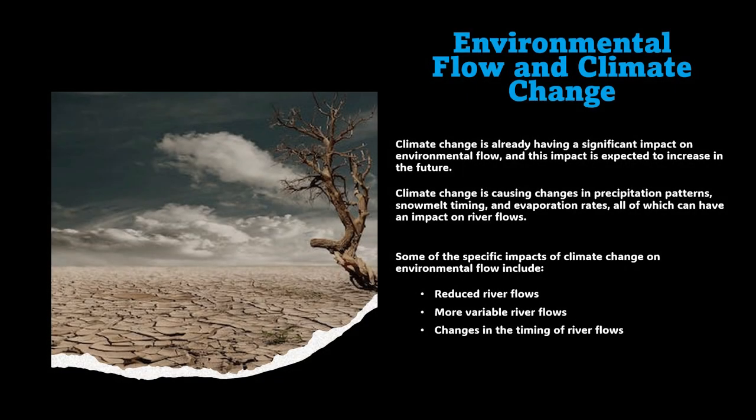Climate change is already having a significant impact on environmental flow, and this impact is expected to increase in the future. Climate change is causing changes in precipitation patterns, snowmelt timing, and evapotranspiration rates, all of which can have an impact on river flows. Some specific impacts include reduced river flows in certain areas, due to increased evaporation rates, decreased snowmelt, and changes in precipitation patterns.